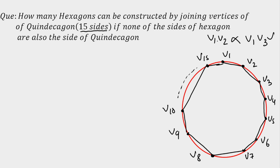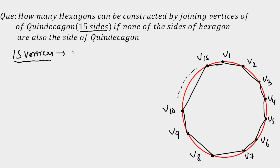So the meaning is: I cannot select two consecutive vertices, because the moment I select two consecutive vertices out of 15, it will be a side of the quindecagon and that is not allowed. So our question reduces to: out of 15 vertices, select 6 in such a way that no two are consecutive.